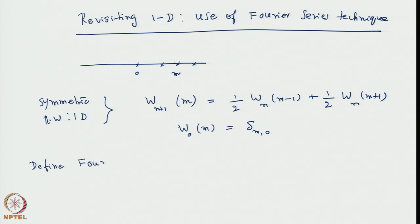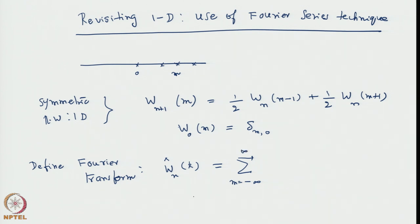Let us carefully develop a Fourier series method of solving it. We define the characteristic function or Fourier transform via a sum formulation. Let k be the conjugate variable. Then, since M is an integer, the Fourier integral becomes a series: W̃_N(k) = Σ_M e^{ikM} · W_N(M). This caret notation denotes that it is in k-space. Multiplying both sides by e^{ikM}, just like the generating function approach, M−1 will lead to a factor e^{ik}.